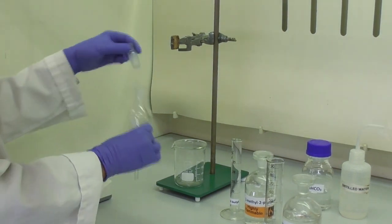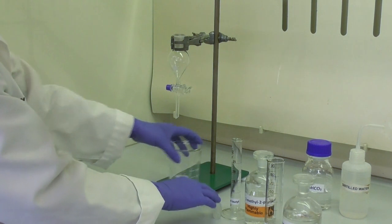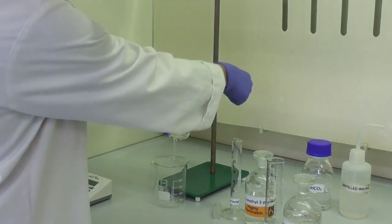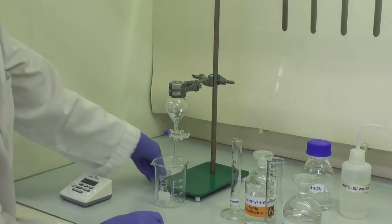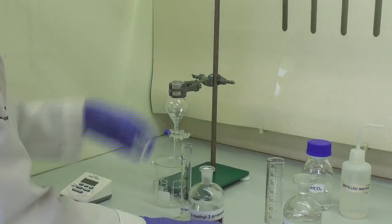The first part of this experiment is carried out in the fume hood. We start by clamping a separating funnel in the fume hood, adjusting the height, making sure the tap is closed and placing a beaker underneath, just in case there are any leaks.